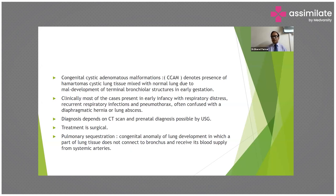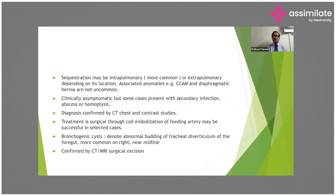Pulmonary sequestration is a congenital anomaly of lung development in which part of the lung tissue does not connect to the bronchus and receives its blood supply from systemic arteries. Sequestration may be intrapulmonary — which is more common — or extrapulmonary. Associated anomalies with CCAM and diaphragmatic hernia are not uncommon. Clinically, pulmonary sequestration is often asymptomatic, but some cases present with secondary infection, abscess, and hemoptysis.